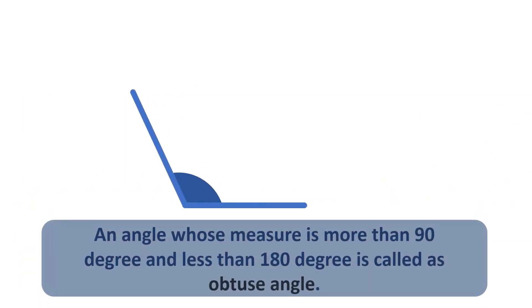An angle whose measure is more than 90 degree and less than 180 degree is called Obtuse Angle.